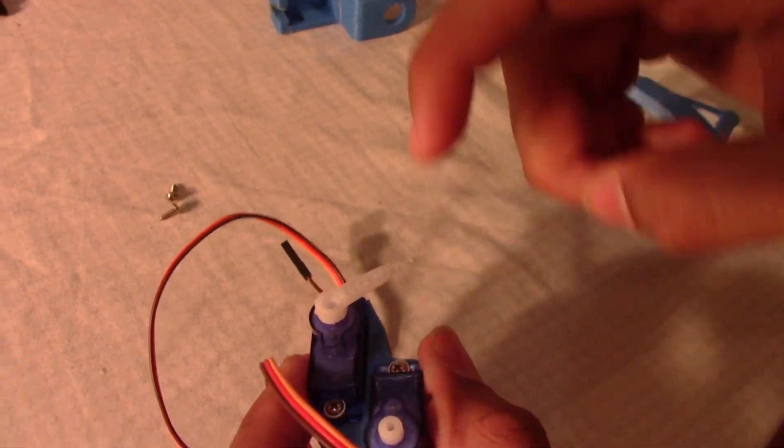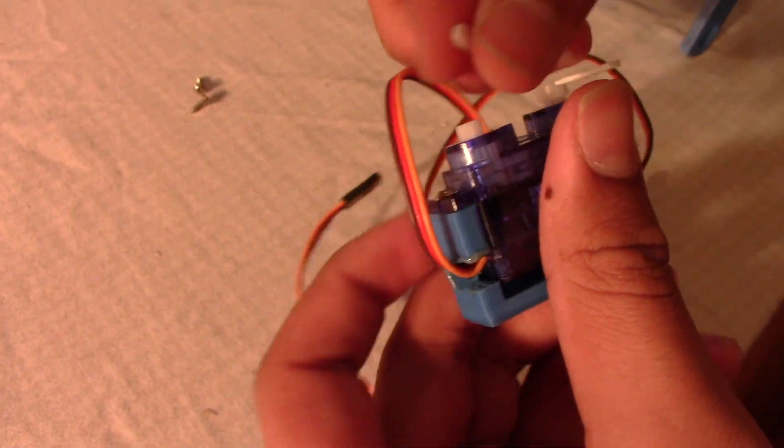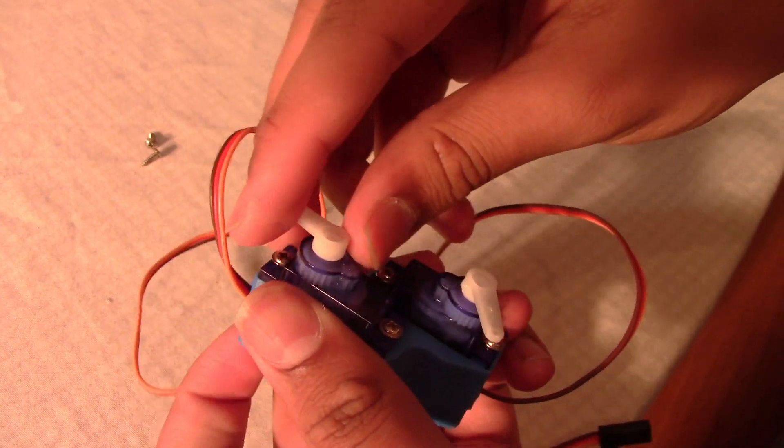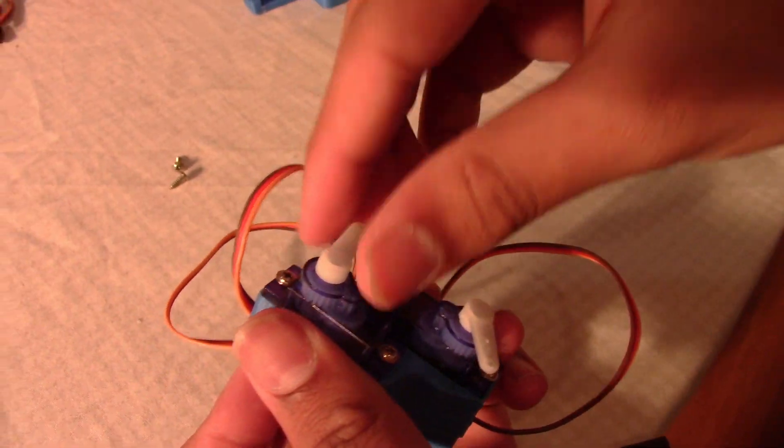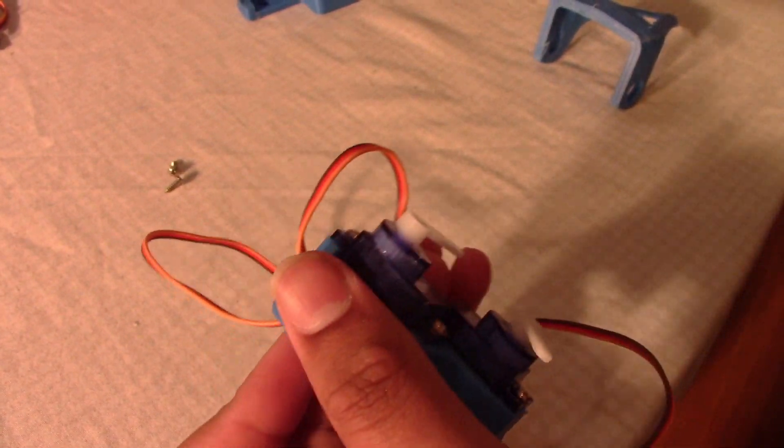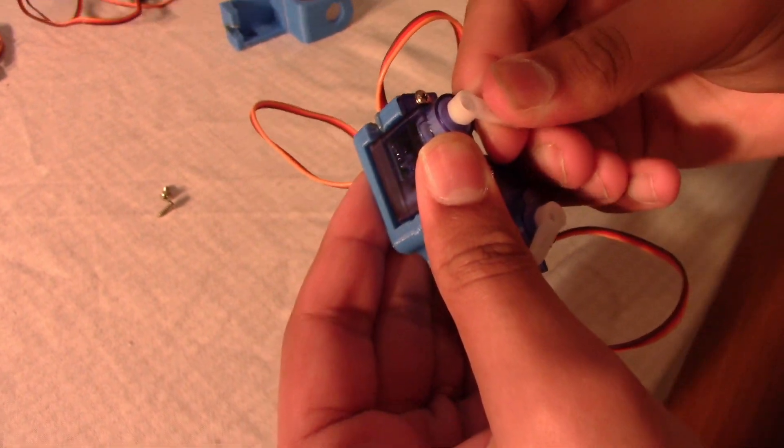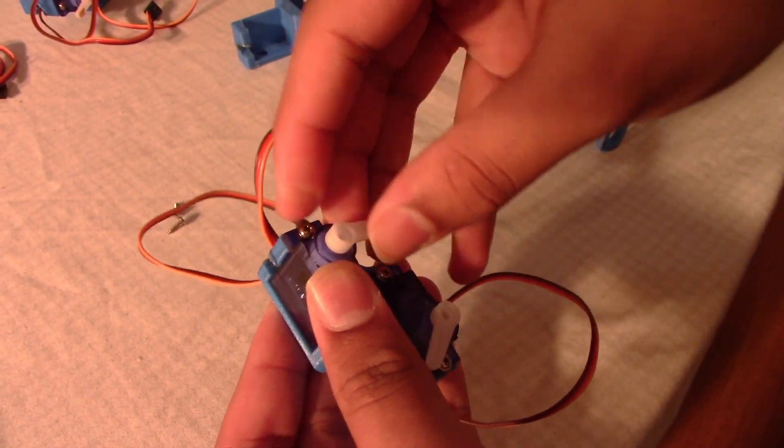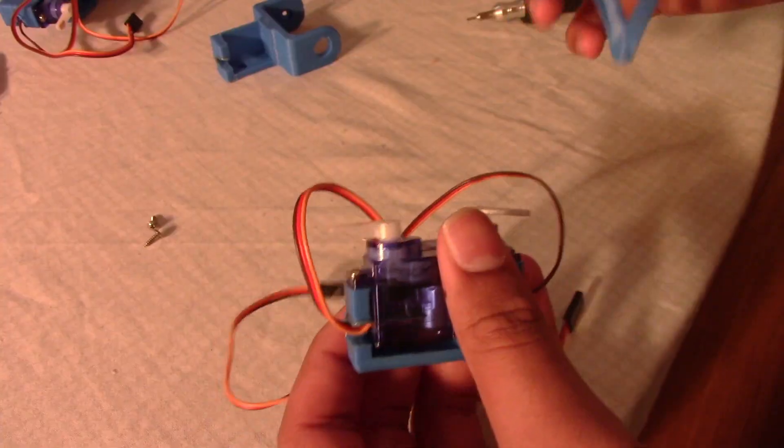After we do this, we do the same thing with this side. Keep in mind if you don't do this and you upload the code then it will not work, because it tells it what degrees to go on. If the degrees are wrong then it won't work. You do the same thing with this one - if it's too much, just take it off and put it on the right angle. This one's done too.